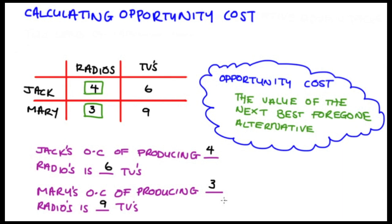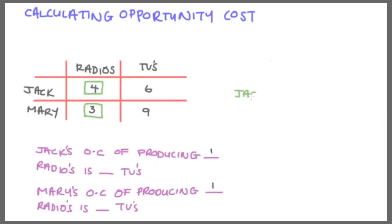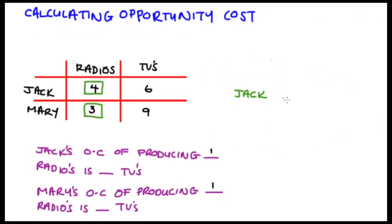Or Mary's opportunity cost of producing just one radio. So this is where some students get a little bit confused, and it is a bit confusing with the fractions and everything.